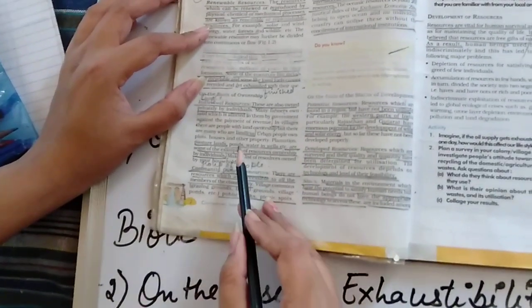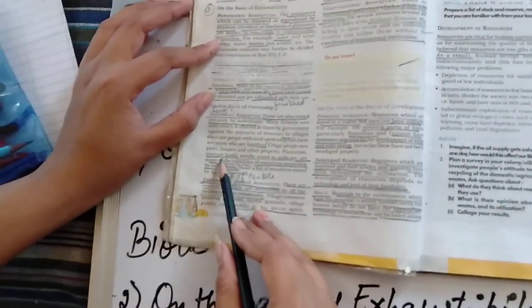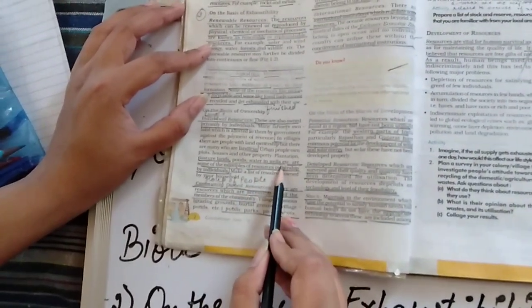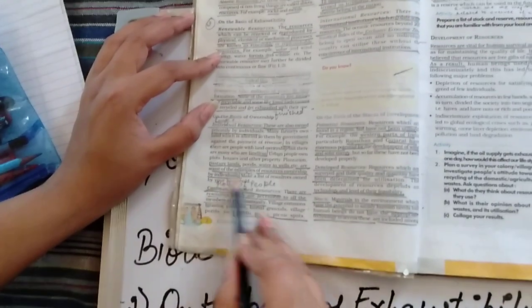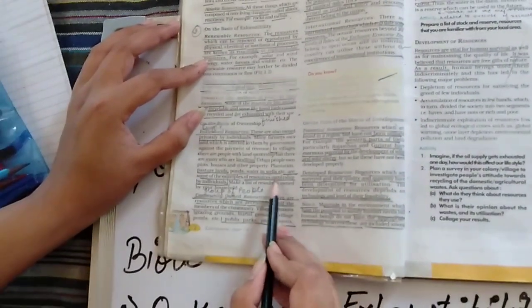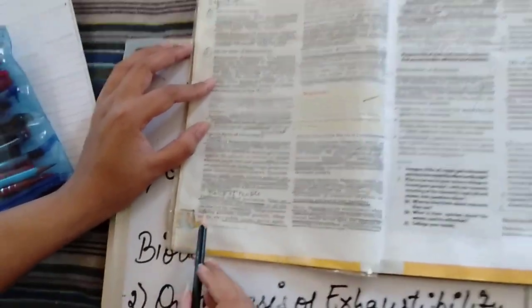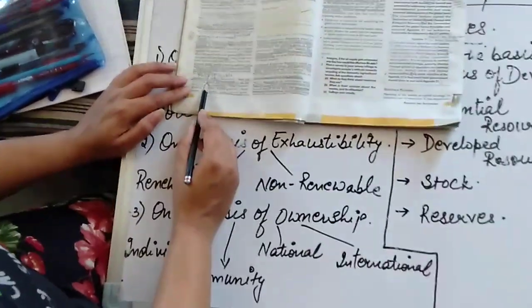Like in villages, there are people with land ownership but there are many who are landless also. If we talk about examples, pasture lands, ponds, water in wells, etc. These are some examples of resource ownership by individual. Now, we move forward to the community resources.